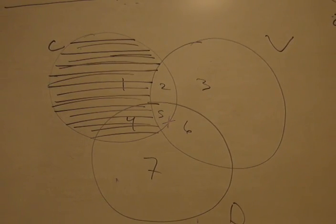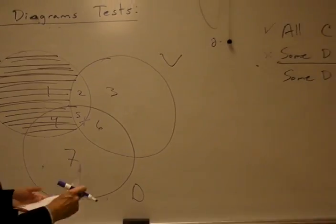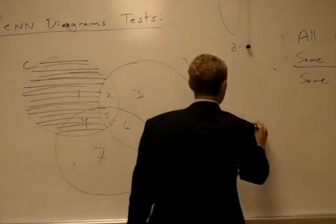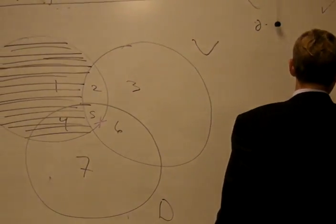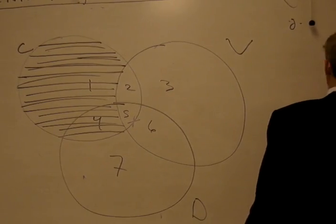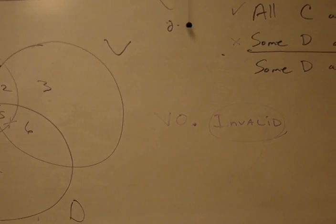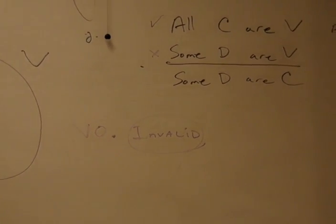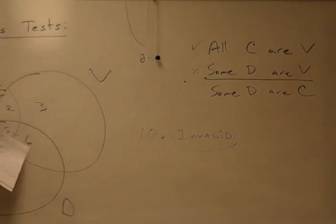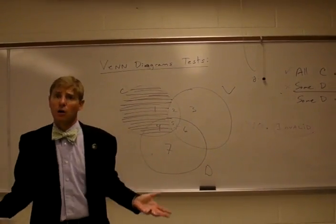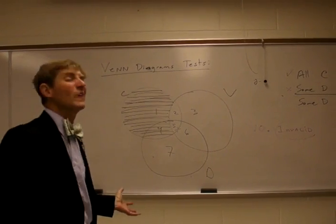So can I conclude that some D are C? No, I can't. This one is invalid because I'm not sure if there are any members in section five or not. I'm not sure if it's in here. I'm not sure if it's in here. I'm not sure if it's in both. So this one is invalid.